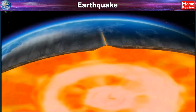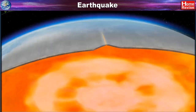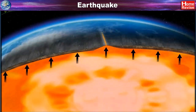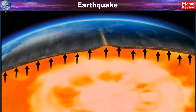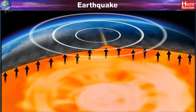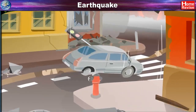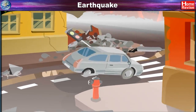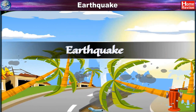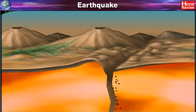Earthquake is due to the movements taking place below the surface of the earth. The crust is subjected to stresses of great magnitude. If this stress exceeds a critical limit, the energy gets released suddenly. As a result, the earth's surface shakes. The shaking of the land is what we call an earthquake.